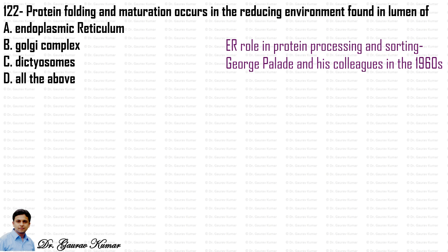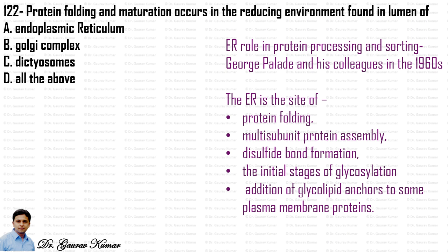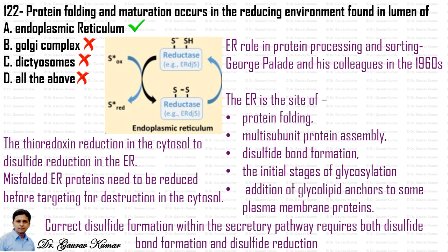Next question: protein folding and maturation occurs in the reducing environment found in the lumen of the ER (endoplasmic reticulum). The role of ER in protein processing and sorting was identified by George Pallade and colleagues in 1960. The ER is the site of protein folding, multi-subunit protein assembly, disulfide bond formation, initial stages of glycosylation, and addition of glycolipid anchors to some plasma membrane proteins.